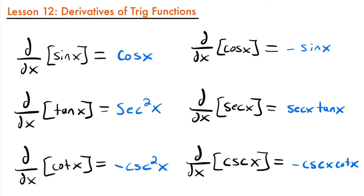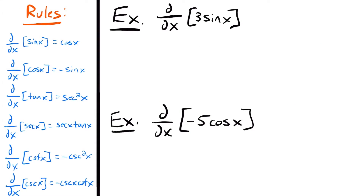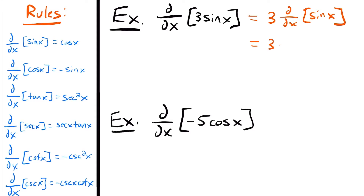Let's look at some examples. Here are our first two, with the derivative rules on the side for reference. We'll start with 3 sine x. When taking the derivative of a constant multiple, you pull the constant out and take the derivative of the function. So this is 3 times the derivative of sine x, which is 3 times cosine x, equal to 3 cosine x.